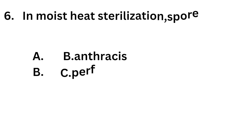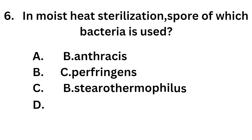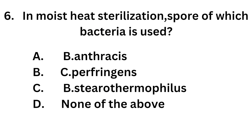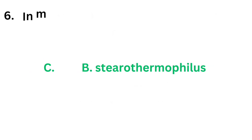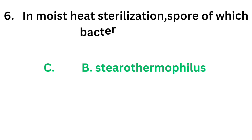Question number 6: In moist heat sterilization, spore of which bacteria is used? Option A: Bacillus anthracis. Option B: Clostridium perfringens. Option C: Bacillus stearothermophilus. Option D: None of the above. The correct answer is Option C, Bacillus stearothermophilus.